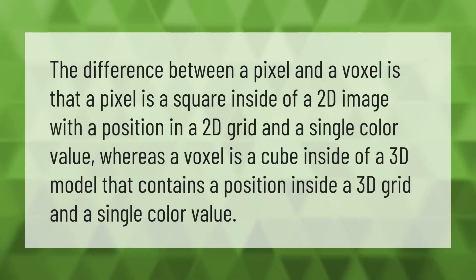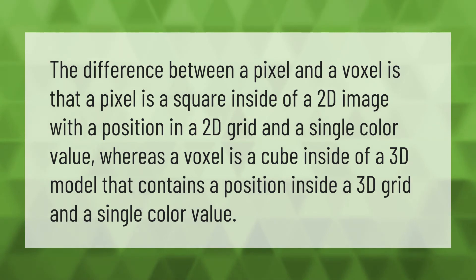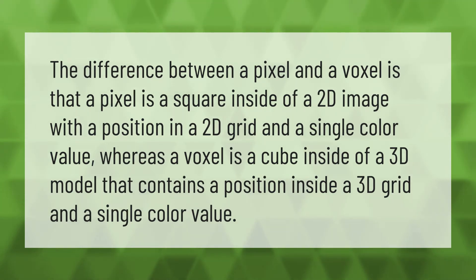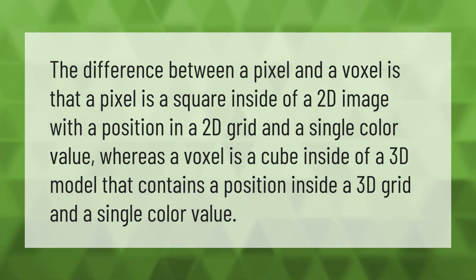The difference between a pixel and a voxel is that a pixel is a square inside a 2D image with a position in a 2D grid and a single color value, whereas a voxel is a cube inside a 3D model that contains a position inside a 3D grid and a single color value.